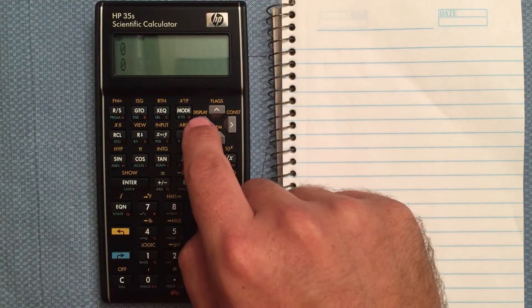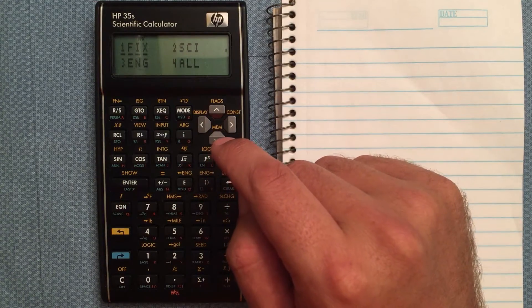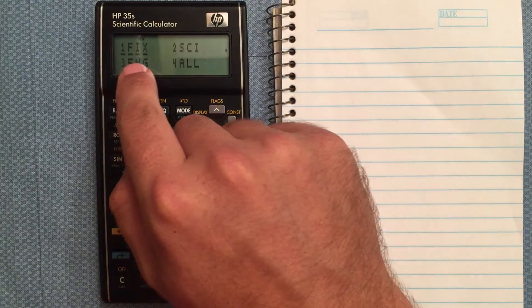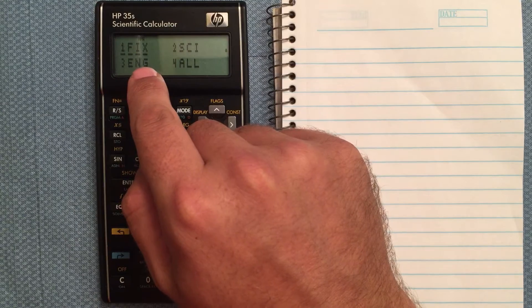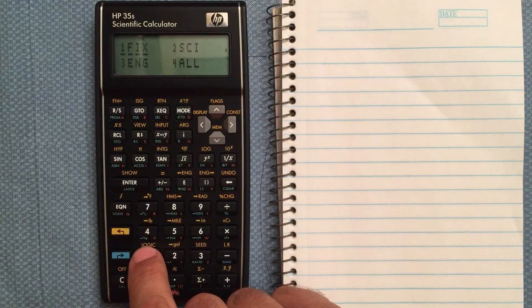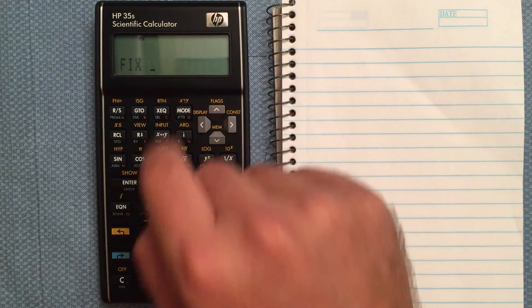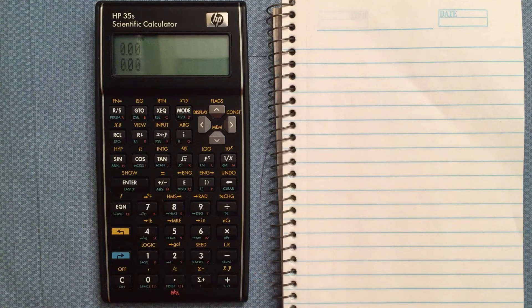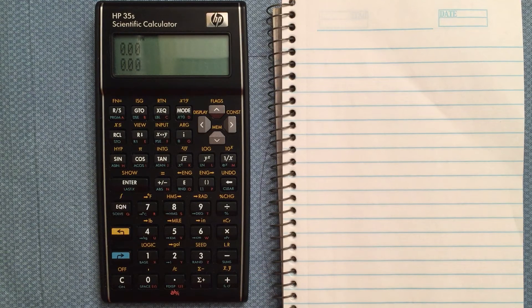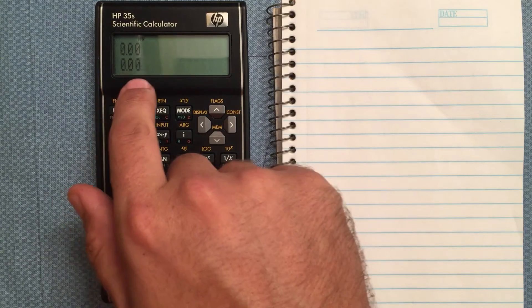The display menu is just a little less intuitive. So fixed, you're going to have a fixed number of decimal points. If I enter fixed, it asks me how many decimal places do I want to display.